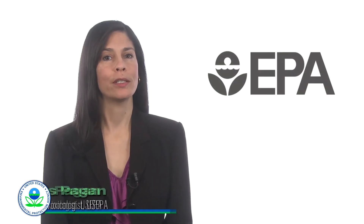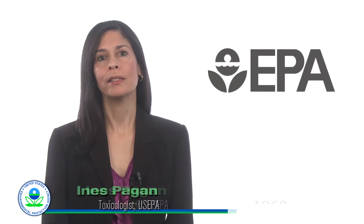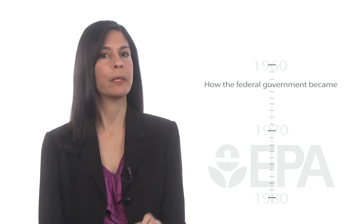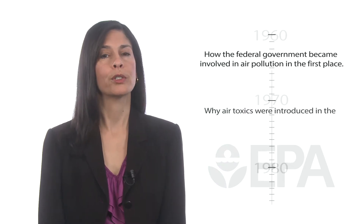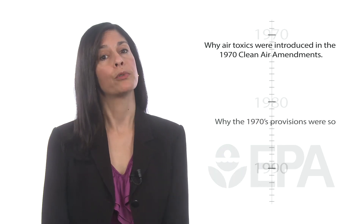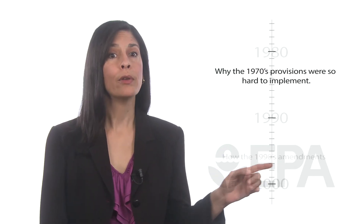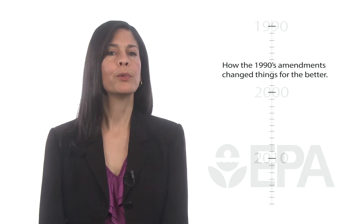In this module, we will talk about the history of risk assessment in the Federal Air Toxics Program. I will highlight some of the more important air pollution legislation and how it has evolved over the years. We will focus on how the Federal Government became involved in air pollution, why air toxics were introduced in the 1970 Clean Air Amendment, why the 1970 provisions were so hard to implement, and how the 1990 amendments changed things for the better. This will bring us up to date, legislatively speaking, on why we conduct air toxics risk assessments today.